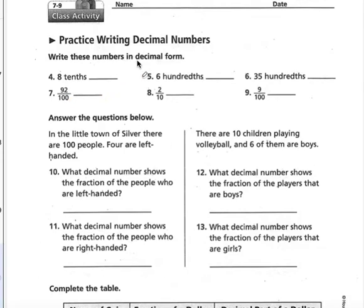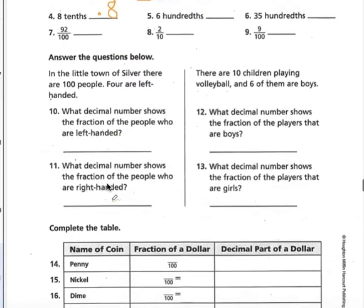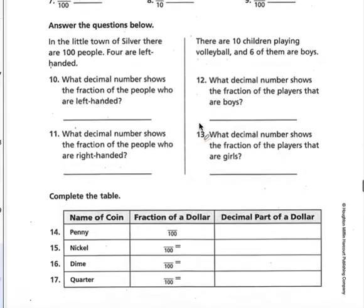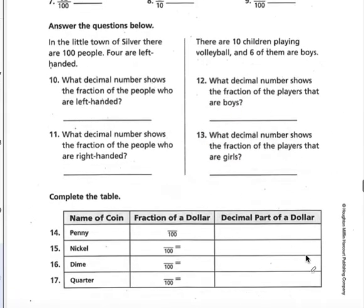So now you have to write it in decimal form. So eight tenths, again, you have to remember where your decimal is, your place value, and these are your tenths, and then you have your hundredths, correct? So eight tenths would be decimal, and it's one place value after the decimal, so I know it's tenths. And then you would have to write this in decimal form, so deciding that. And then you have to read your questions and answer these, and then with these answers, complete this table.